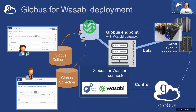Without getting too technical, I want to talk briefly about how the joint solution is deployed. We use things called endpoints — typically one or more data transfer nodes that have the Globus Connect server software installed along with the Globus for Wasabi connector. That then acts as a gateway to the buckets on Wasabi cloud. From the user perspective, they come via one of the many Globus UIs — the web app, command line interface, or REST API — and access data through things called collections, which they can move and share.